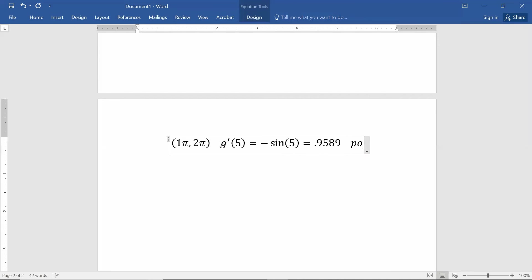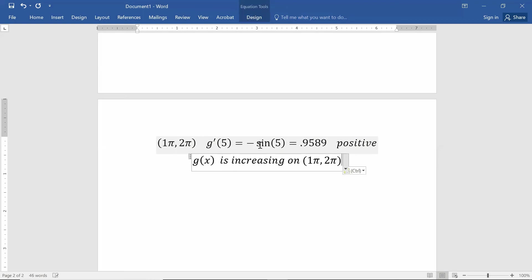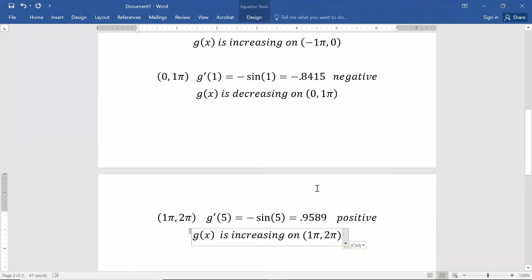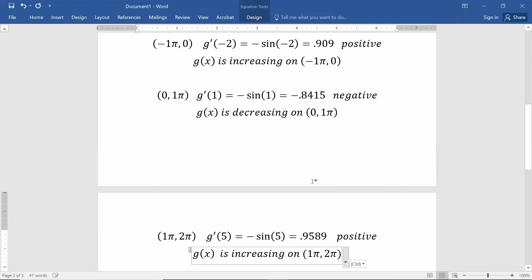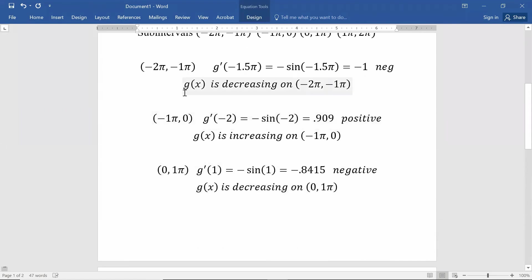I got about 0.9589. Again, the important part is that it's positive. And that means my original function between 1π and 2π is increasing. So in that interval, obviously, is what I'm meaning.